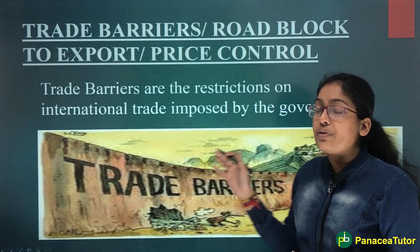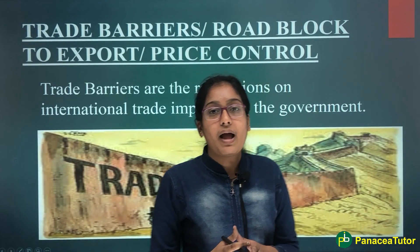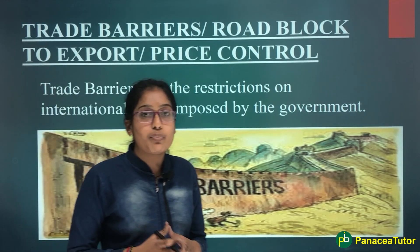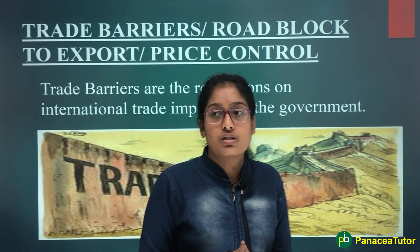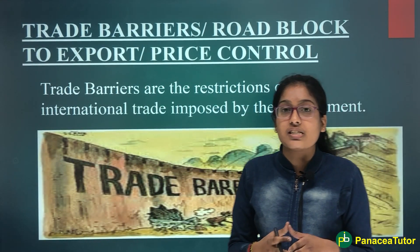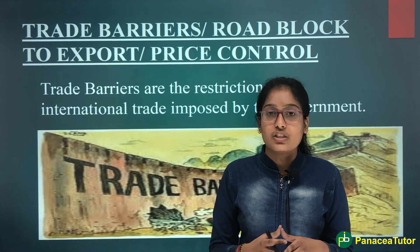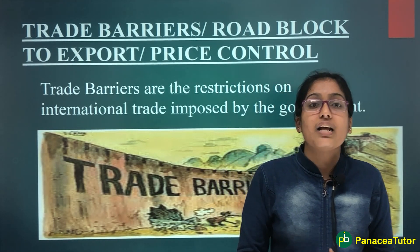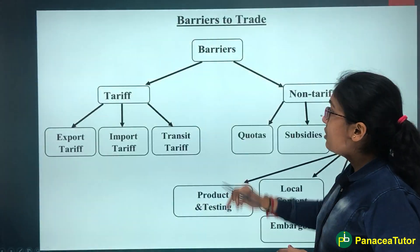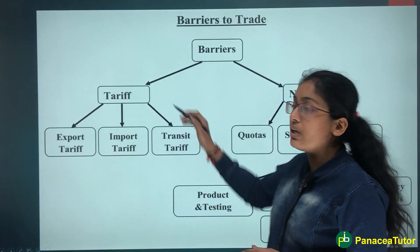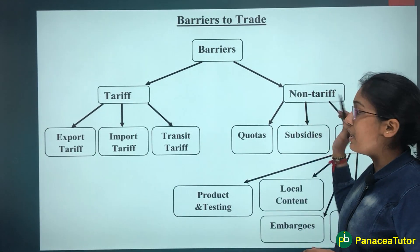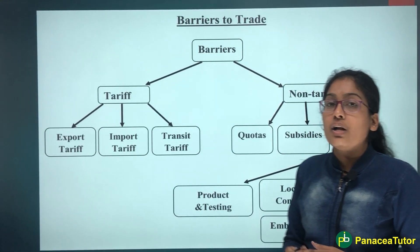Ab Trade Barriers — Trade Barriers ka another name hai 'price control and road block to exports.' Trade Barriers jo hai, wo restrictions hain jo ki International Trade par lagti hain government ki taraf se. Basically two types ke Trade Barriers hain: Tariff Barriers and Non-Tariff Barriers.